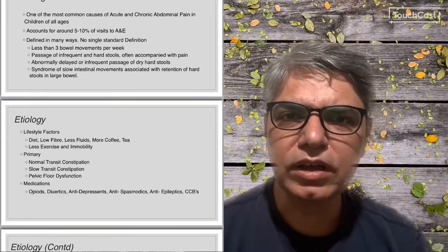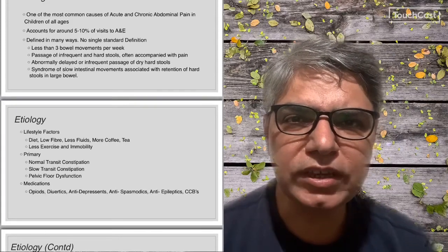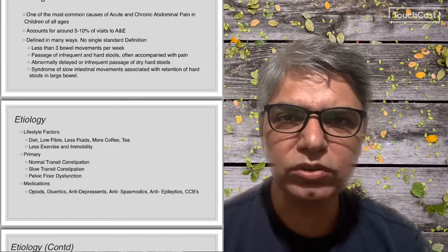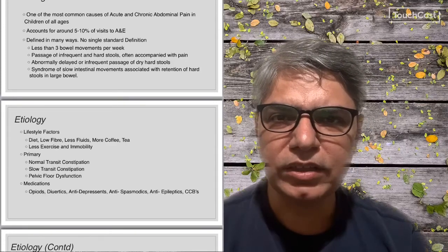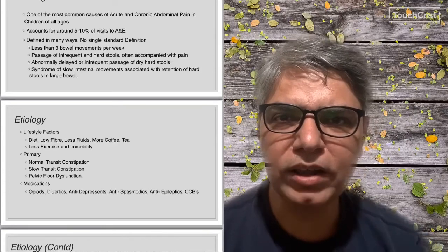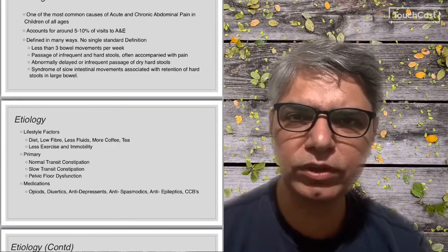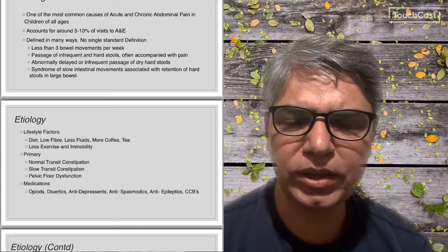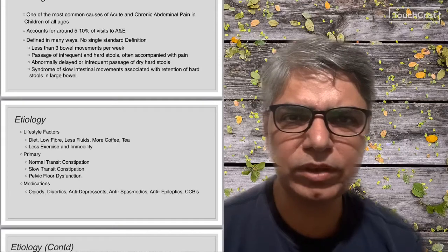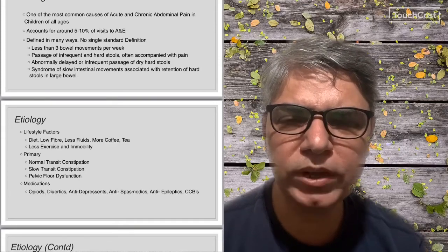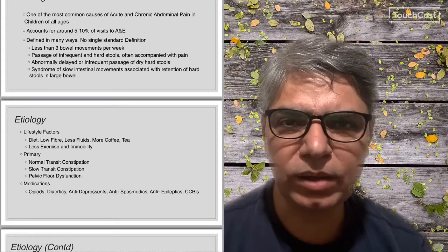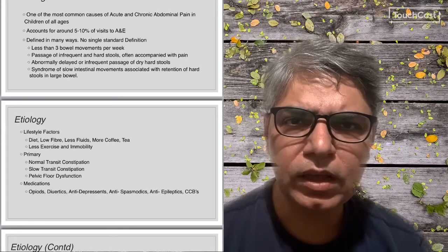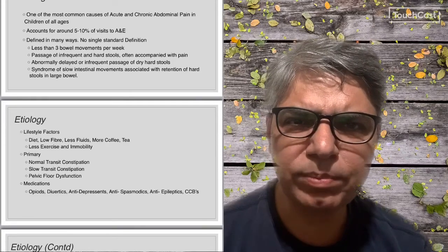Slow transit constipation is the condition in which intestinal motility is slowed down. Because of this delayed transit time, stools become quite hard. This type of constipation is usually associated with a lot of straining — the child has to strain very hard and sometimes ends up with anal fissures. If it becomes chronic over time, it can also lead to hemorrhoids.